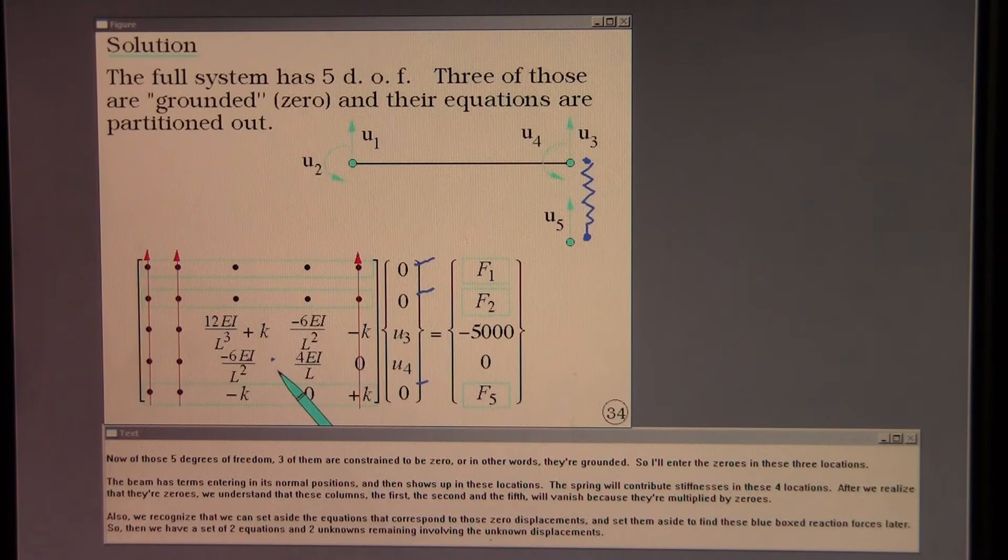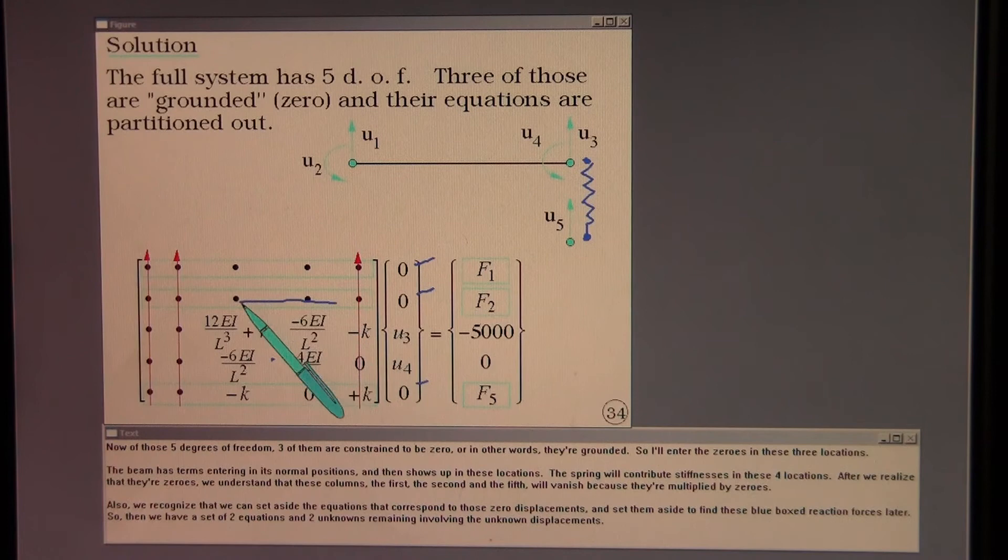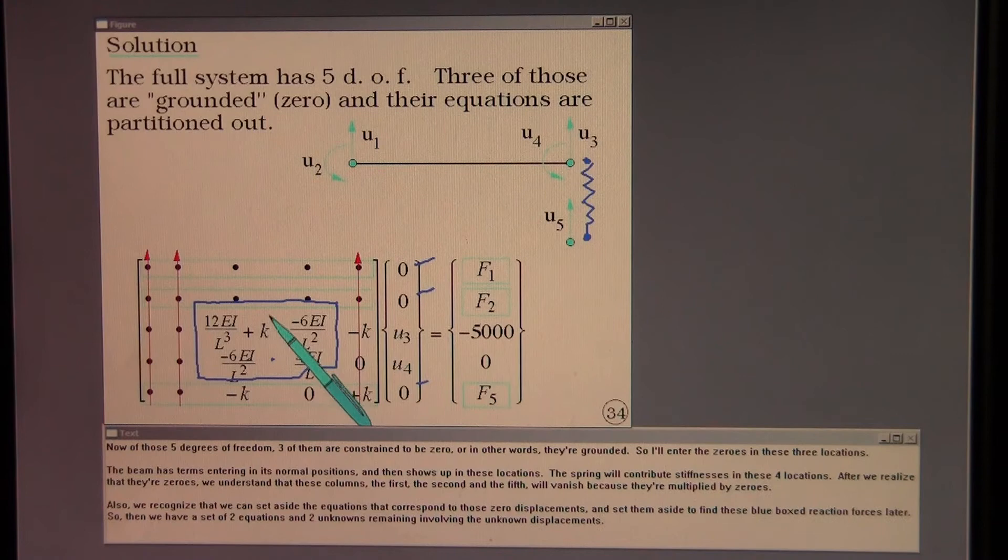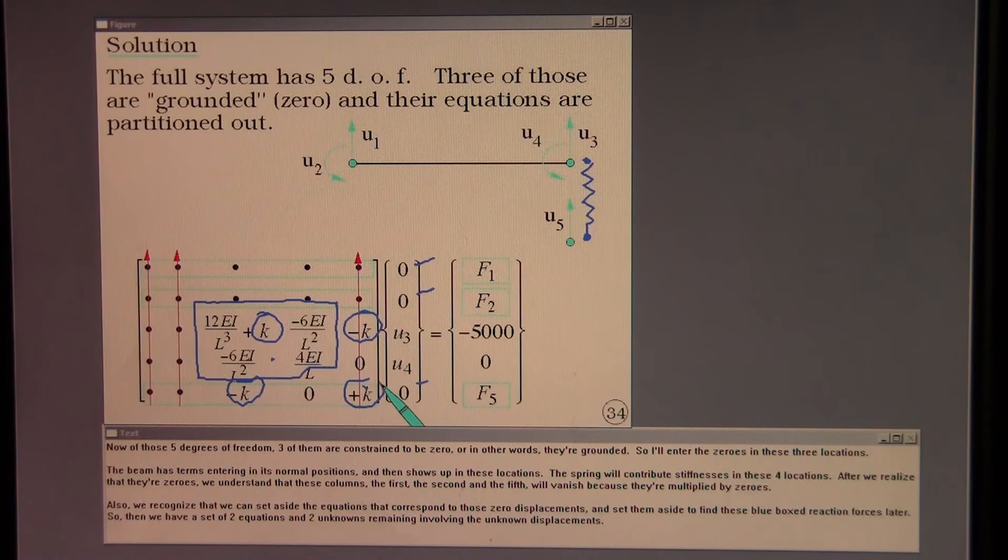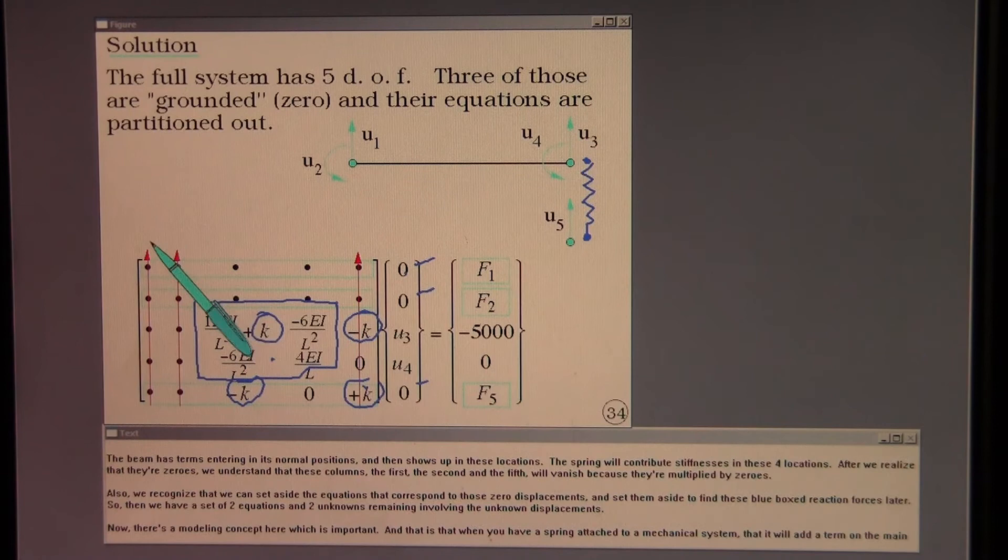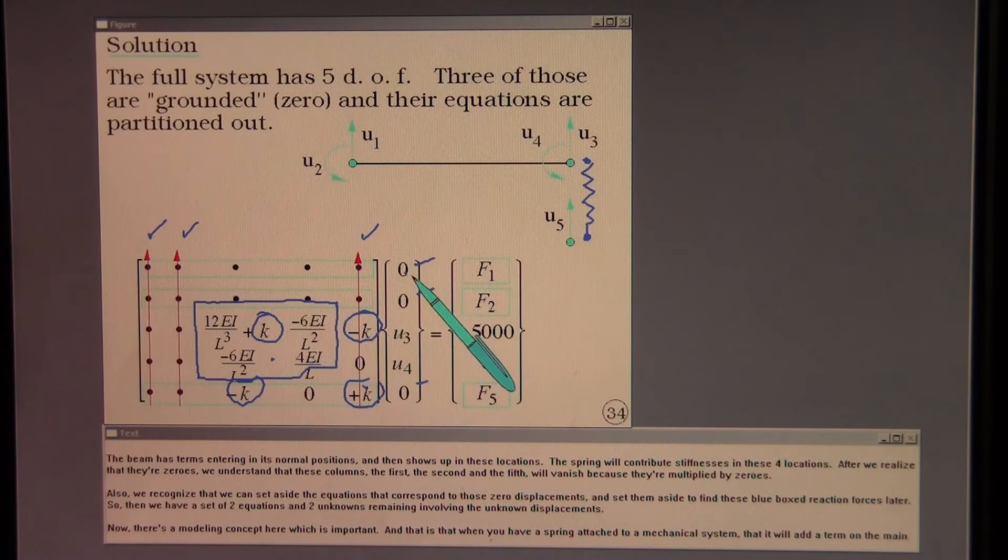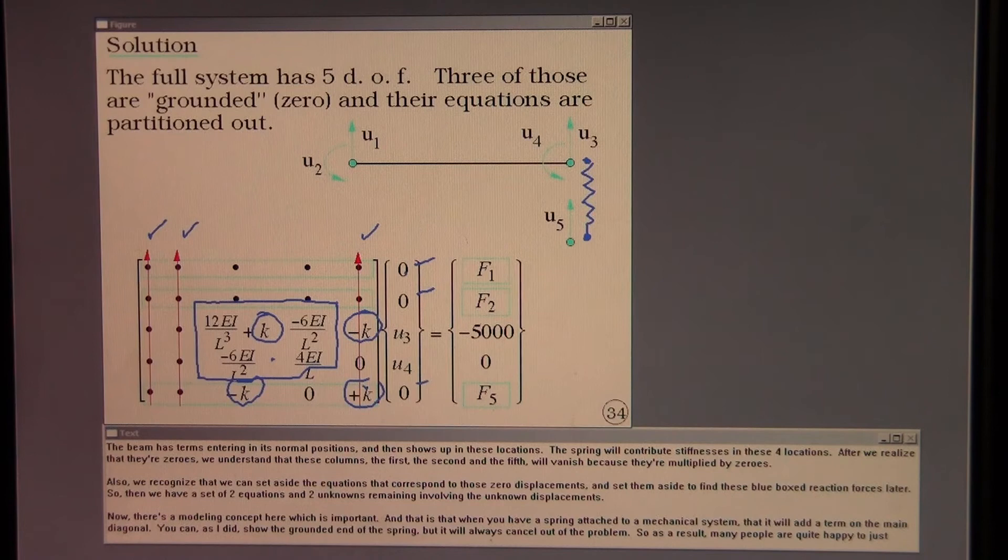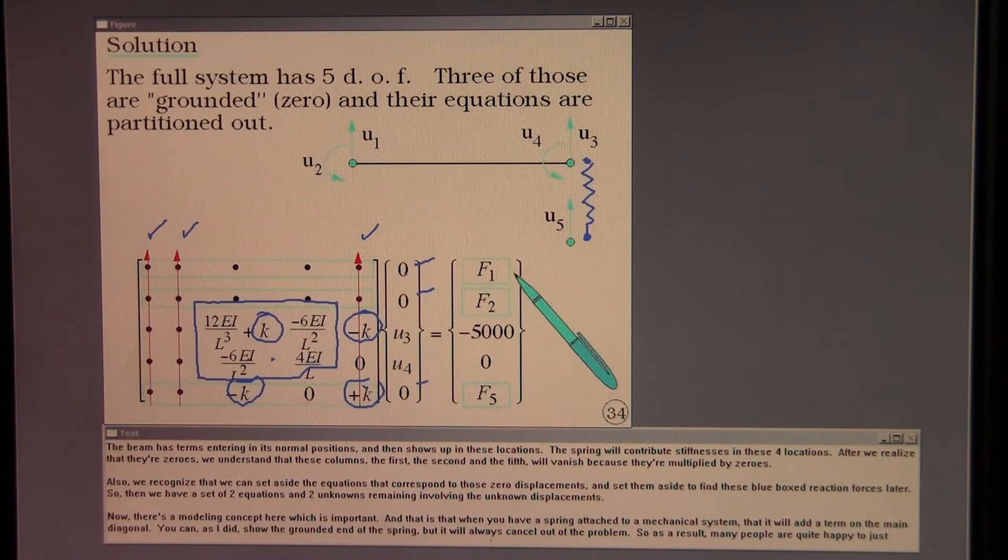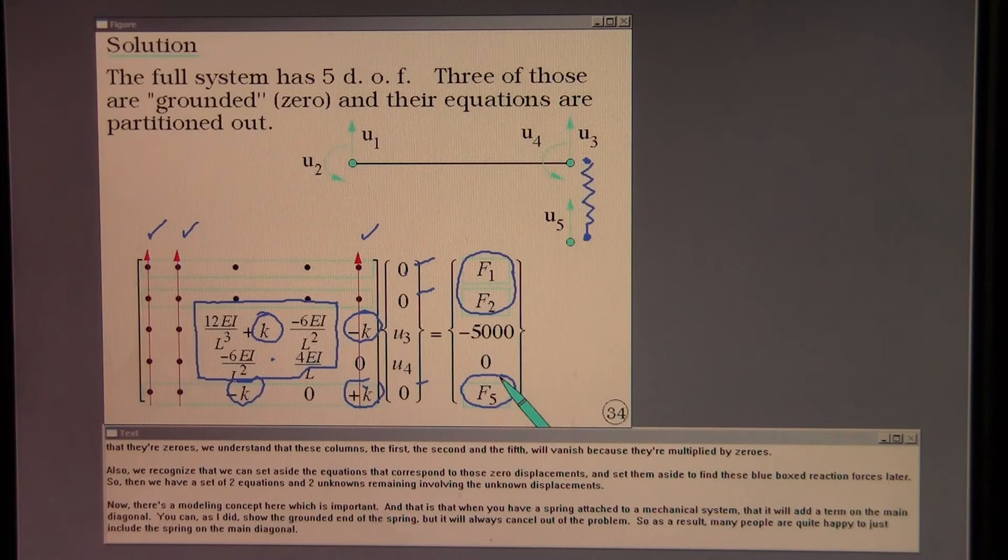The beam has terms entering in its normal positions and shows up in these locations. The spring will contribute stiffnesses in these 4 locations. After we realize that there are zeros, we understand that these columns, the 1st, the 2nd, and the 5th, will vanish because they are multiplied by zeros. Also we recognize that we can set aside the equations that correspond to those zero displacements and set them aside to find these blue boxed reaction forces later. So then we have a set of 2 equations in 2 unknowns remaining involving the unknown displacements.